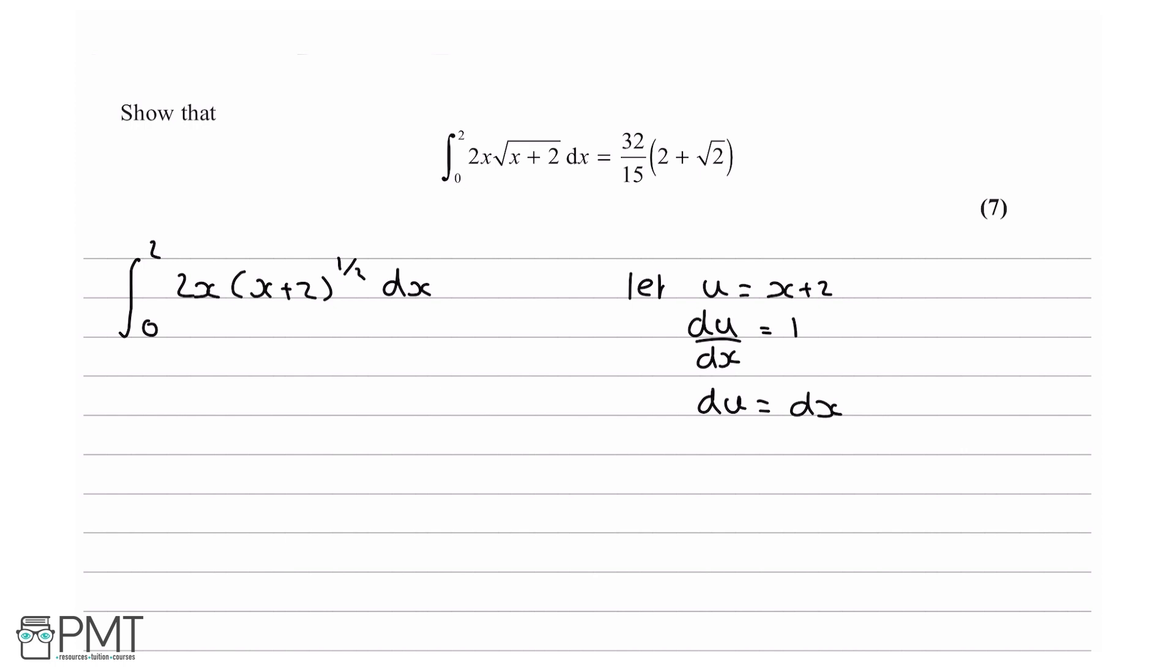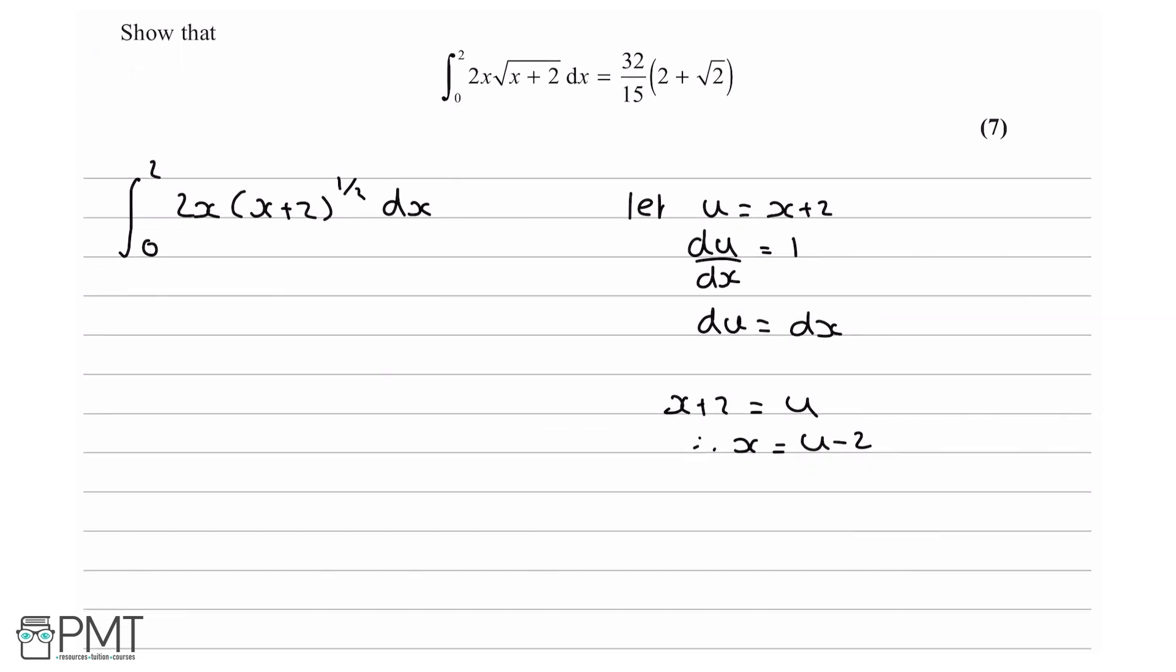The next thing I'm going to do is rearrange u equals x plus 2 for x. So we're going to say that x plus 2 equals u and therefore x equals u minus 2. The final step is I'm going to change both of the limits from the x world to the u world. So at x equals 2, u equals 4, and at x equals 0, u equals 2.